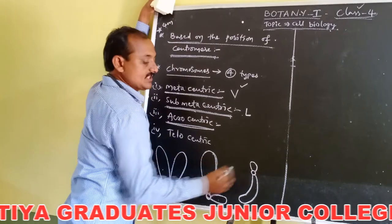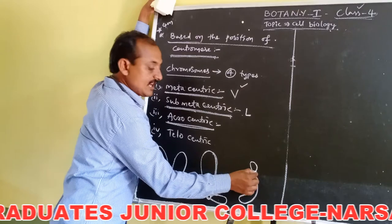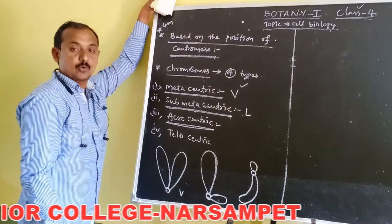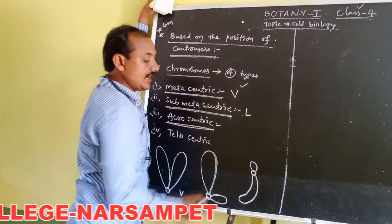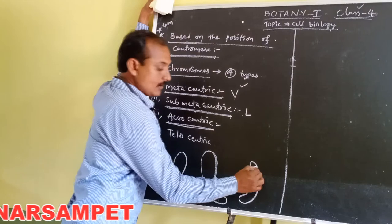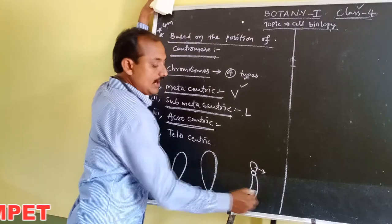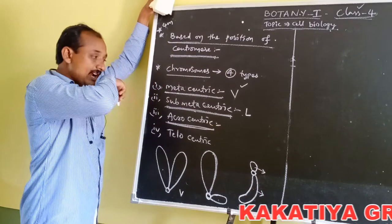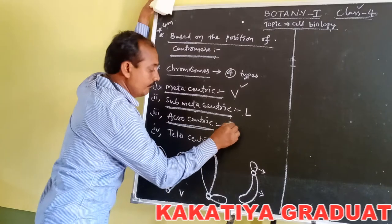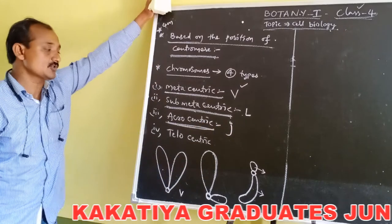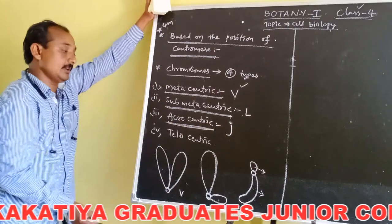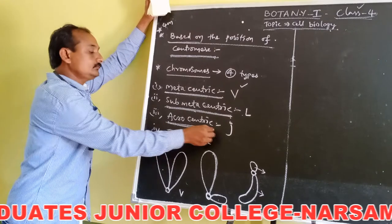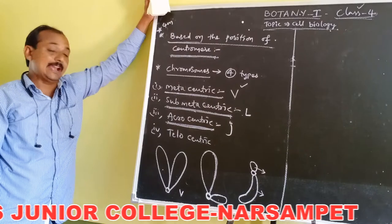In acrocentric chromosomes, the centromere is present at one end of the chromosome. It contains two unequal arms — one is very short and another is very long. During anaphase, these chromosomes appear J-shaped. Such chromosomes are called acrocentric chromosomes.